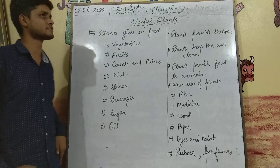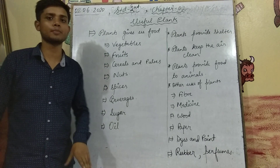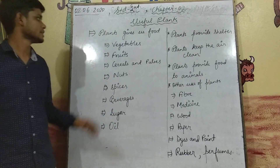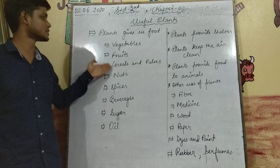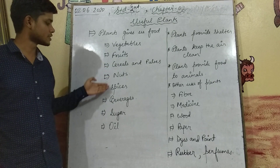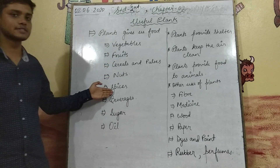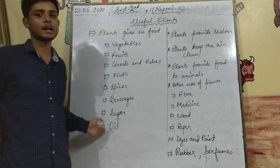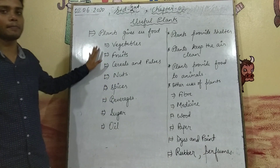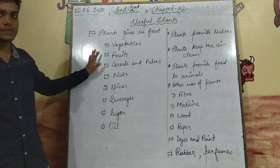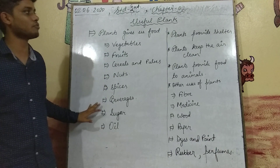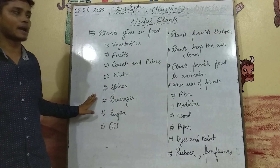Talking about the plants giving us food — fruits, nuts, spices, beverages, sugar, and wine — these all things are provided by plants.